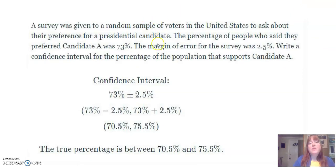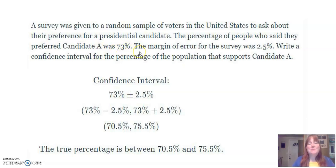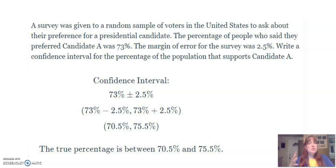Here's another one — especially with election season coming up, you are going to hear tons of these. They gave a sample of voters in the United States about their preference for a candidate. The percentage of people who said they preferred candidate A was 73% — that's a really high percentage for a presidential candidate. The margin of error for the survey was 2.5%. This happened in the last election where they believe a certain percent of people are supporting a candidate, and then when all the votes came in, the margin of error told us this person didn't get quite as many votes as expected.